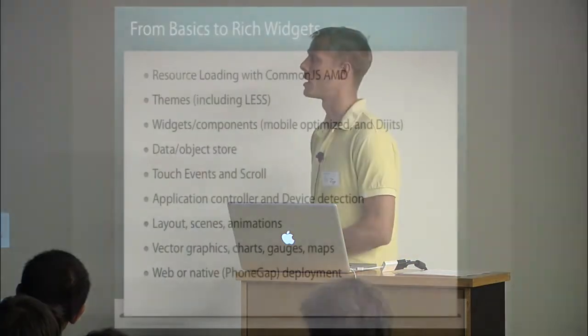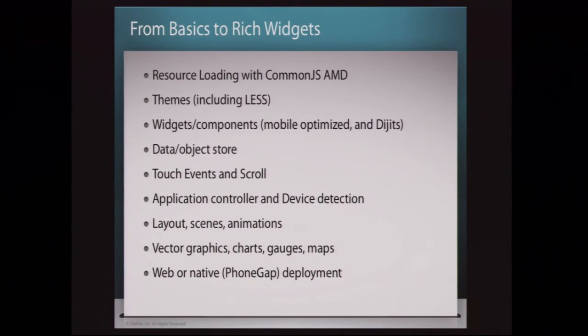We're using LESS in our themes. We're increasingly having mobile optimized widgets. We're also using very much an MVC style data structure where we have a data model we call object stores. It's actually based upon the HTML5 IndexedDB API, which follows a get, put, remove API — very simple to use, but it provides a solid foundation. That's especially important in a PhoneGap style application where it really is an application. You're building a true application with a solid, well thought out MVC style architecture with real modules, a real data model, and real views and controllers.